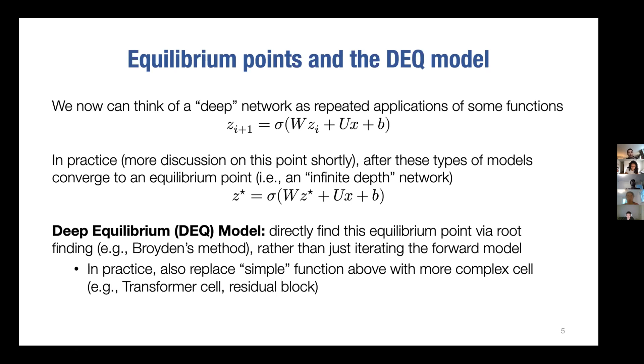It turns out if you use this infinite depth point z star, it does as well as if you unroll the full network. Using that as your network, just finding this equilibrium point, is very powerful. The idea of our approach, which we call deep equilibrium models, is that rather than iterate this process in a traditional way, we just directly try to find that equilibrium point using things like root finding equations. This is obviously a non-linear equation we have to solve, and if we can solve it exactly, we have computed the same thing that an infinite depth neural network would compute.